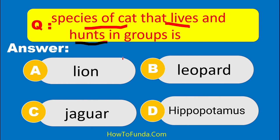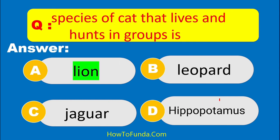Is it lion species, leopard species, jaguar species, or hippopotamus species? The answer is lion — lions are the type of cat that lives together and hunts in a group.